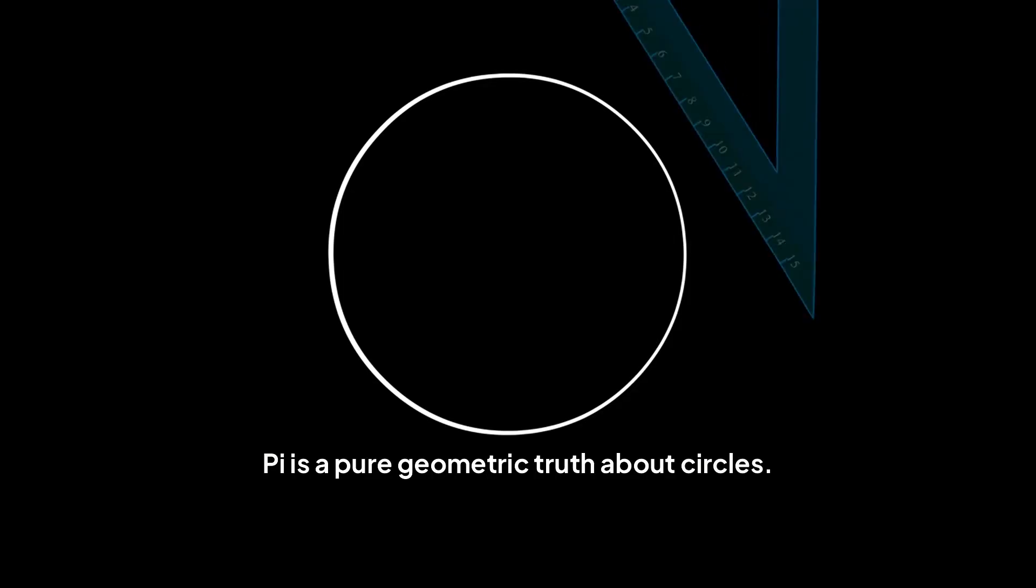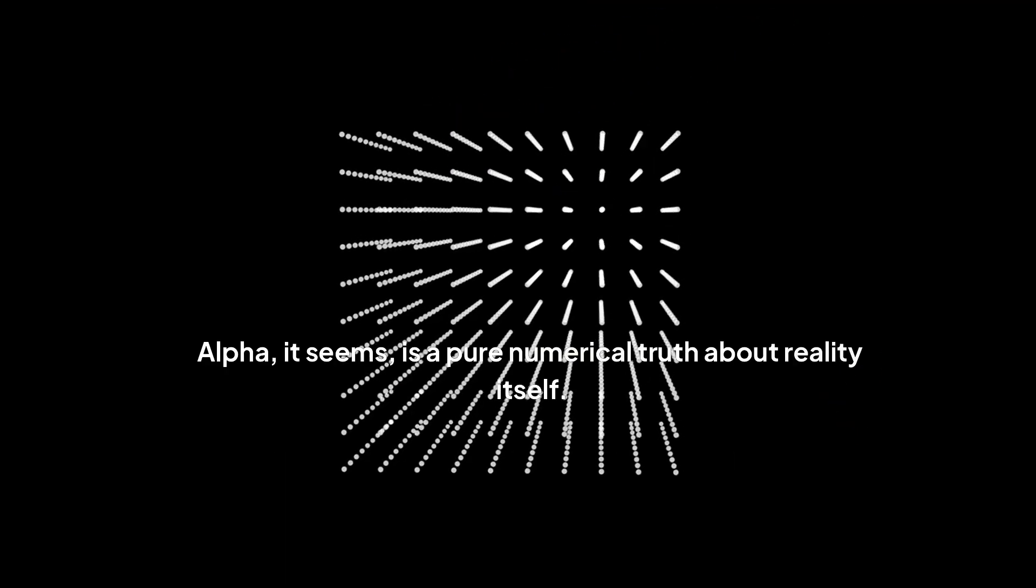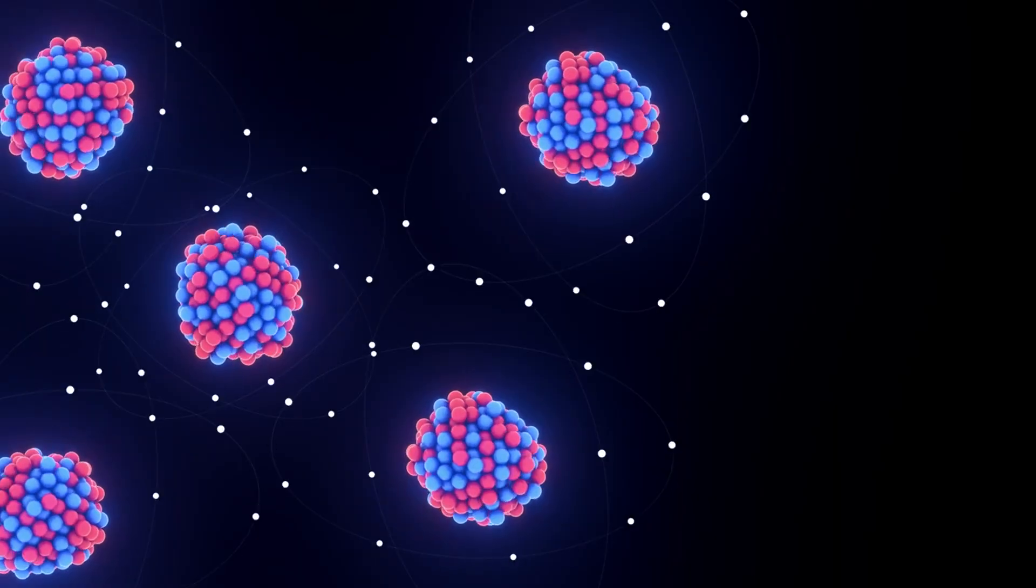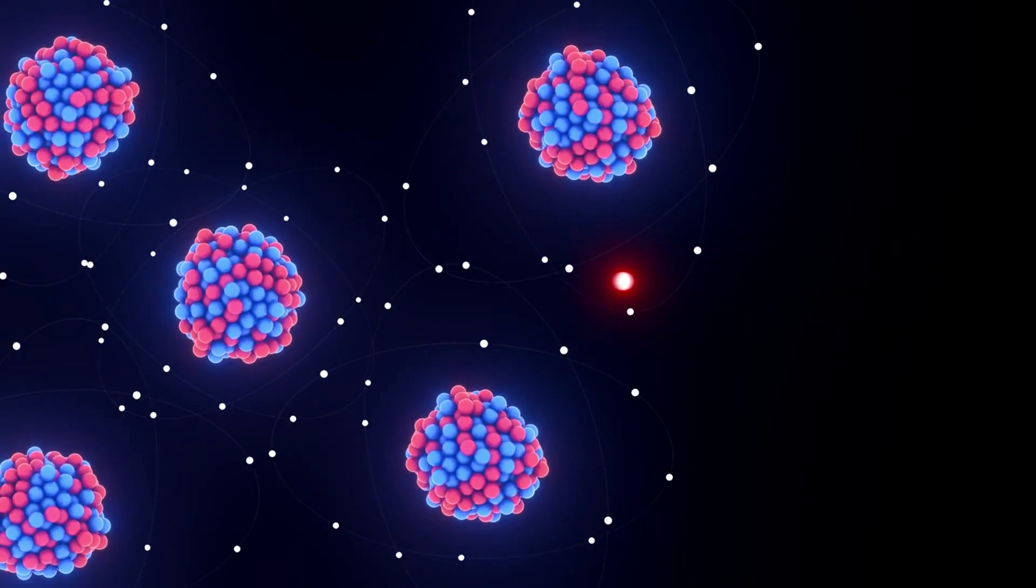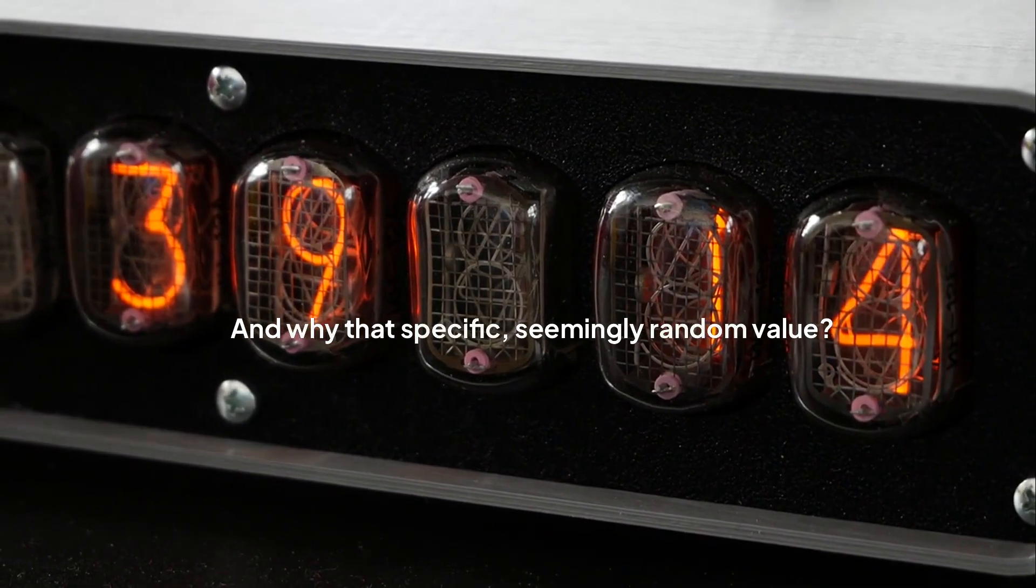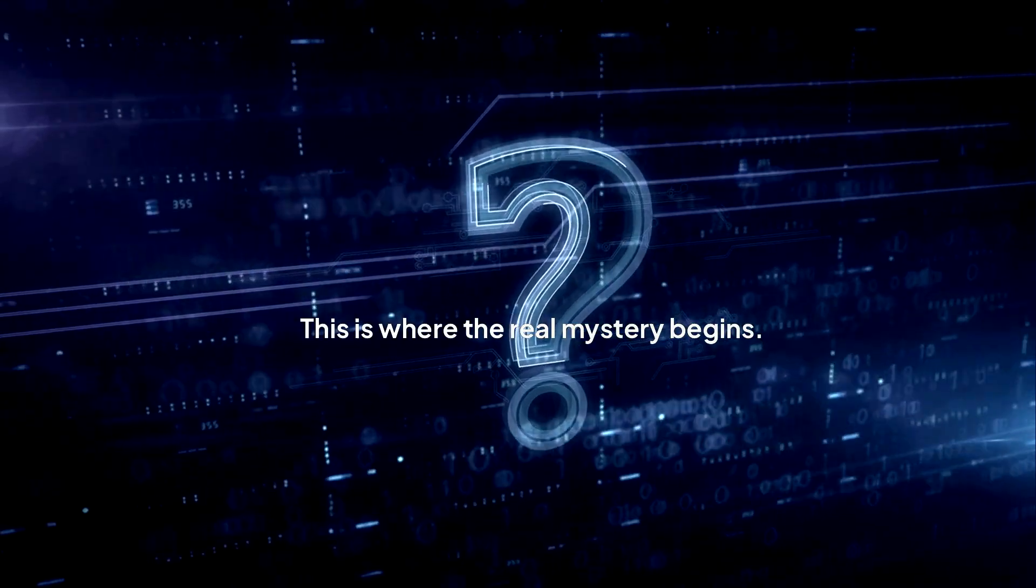Pi is a pure geometric truth about circles. Alpha, it seems, is a pure numerical truth about reality itself. It's the number that tells an electron just how much to care about a proton's pull, and how likely it is to spit out a photon of light. But where did this number come from? And why that specific, seemingly random value? This is where the real mystery begins.